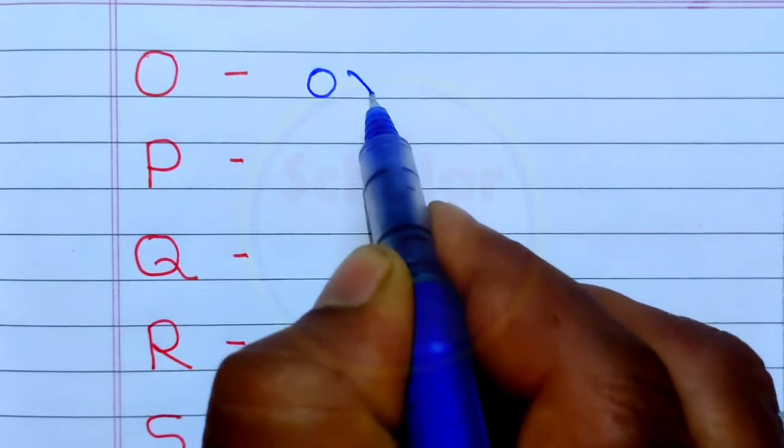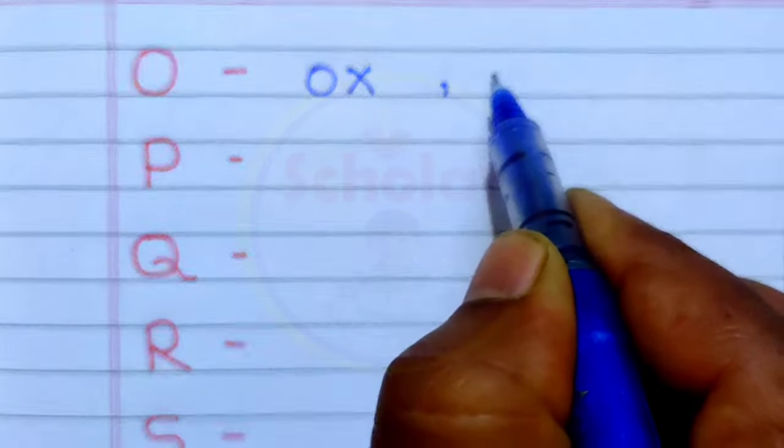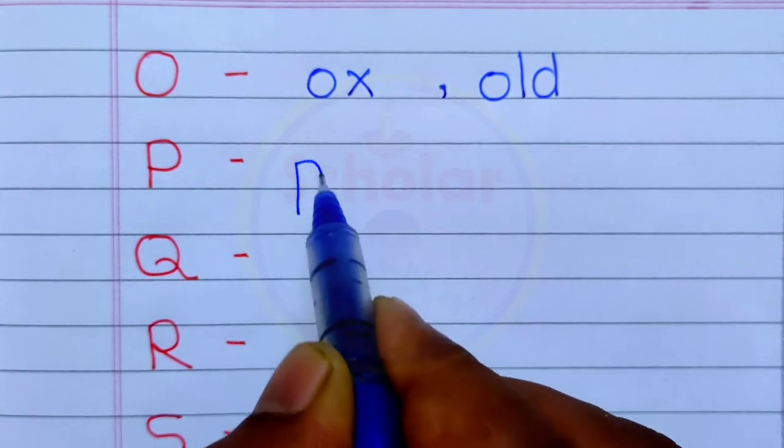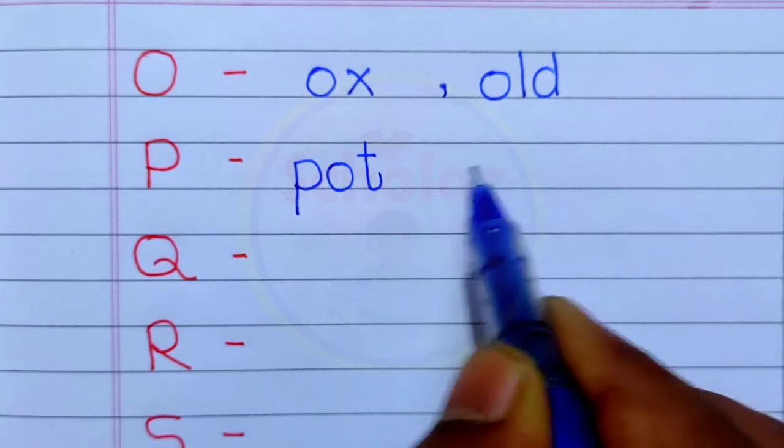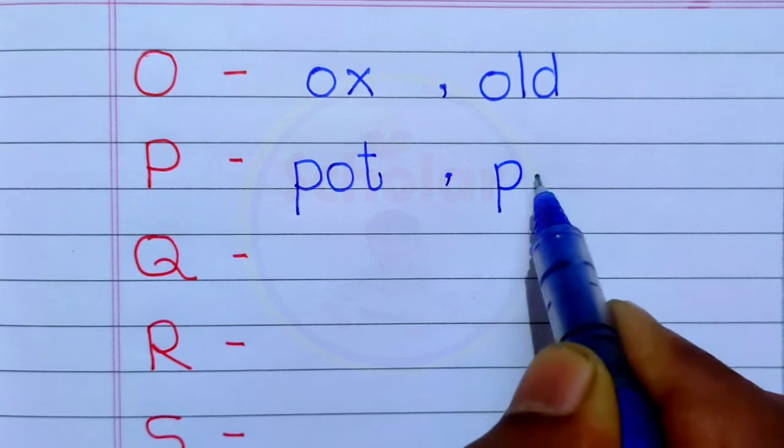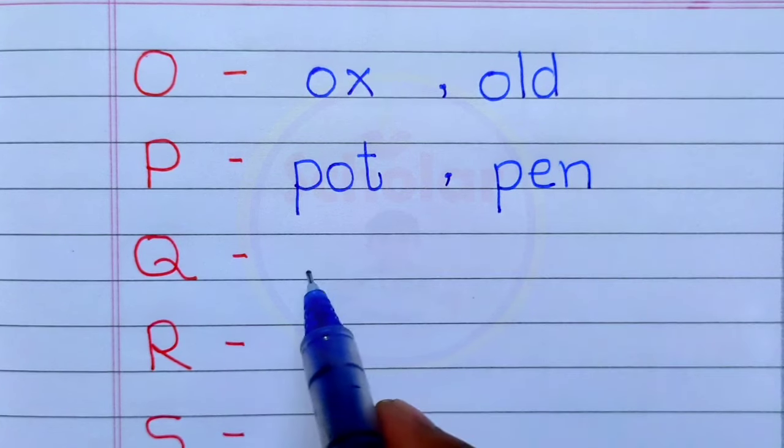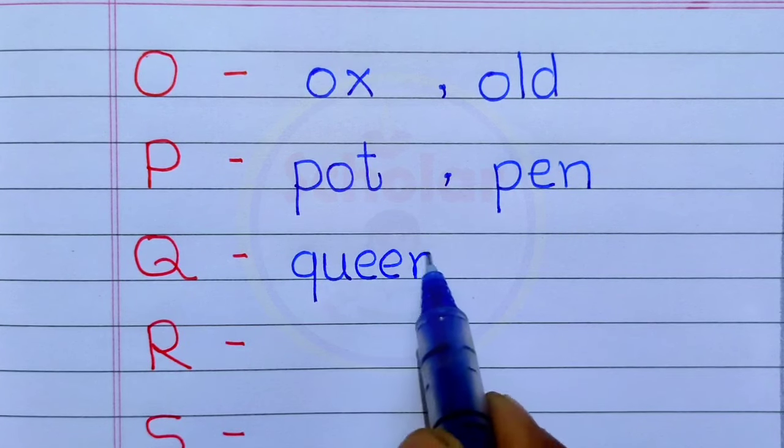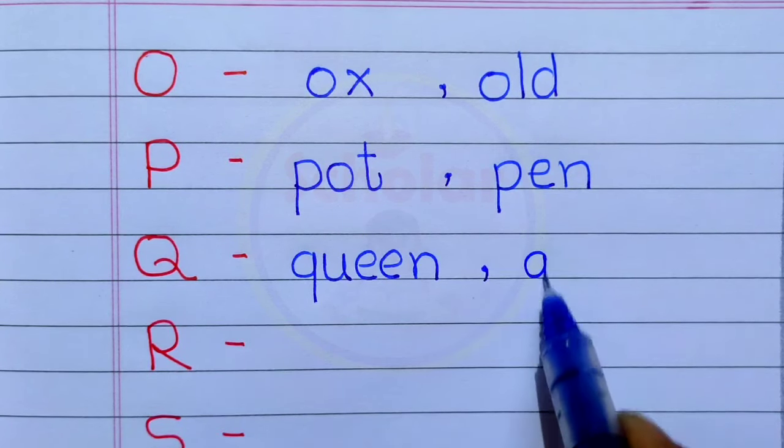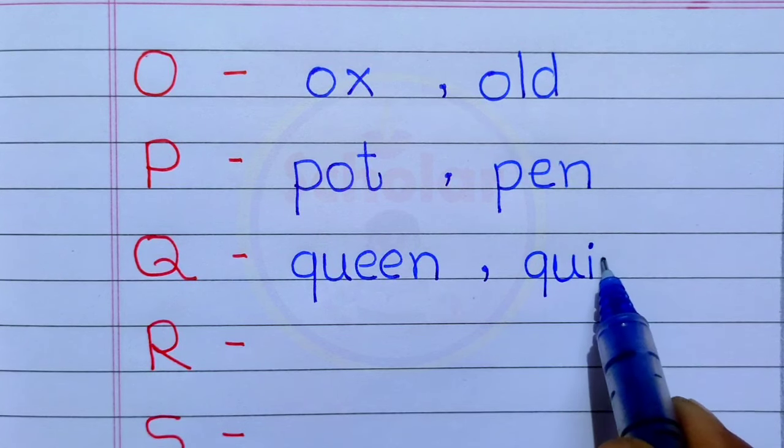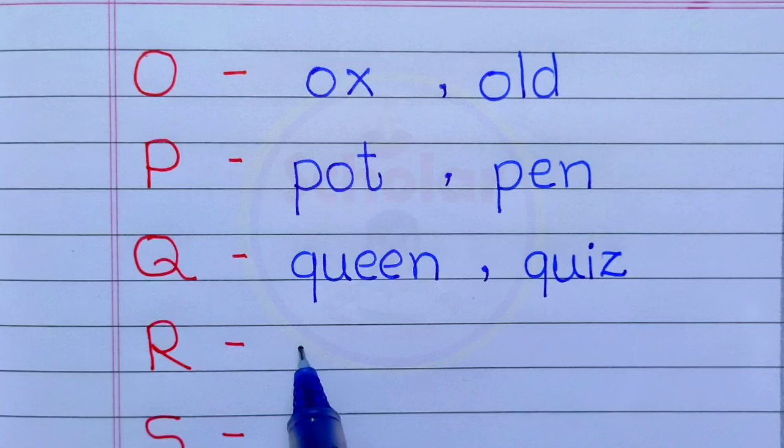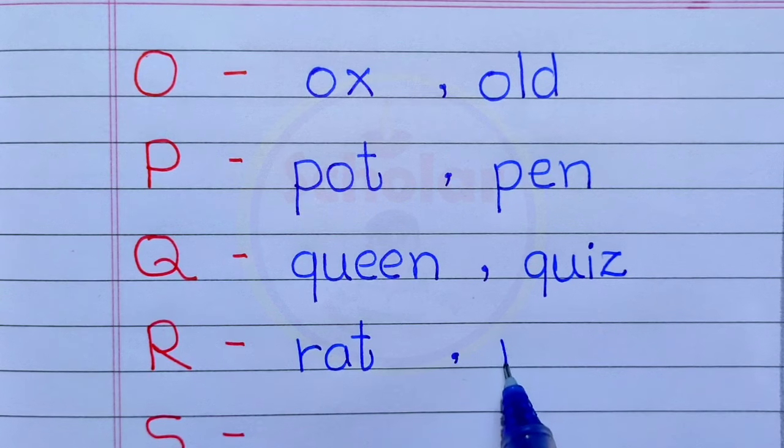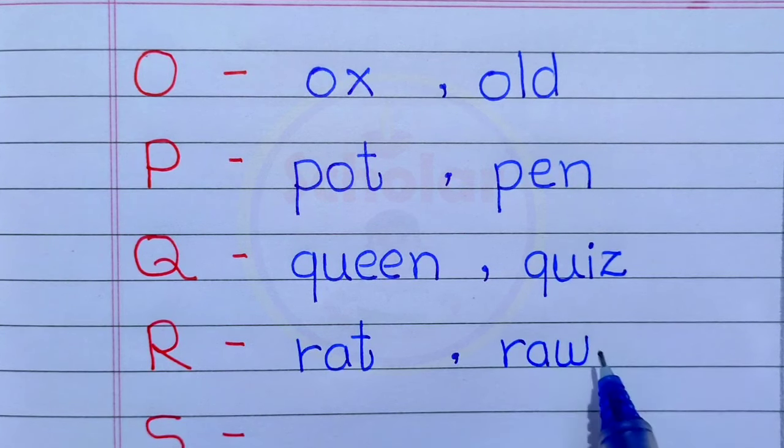O - Ox, Old. P - Pot, Pen. Q - Queen, Quiz. R - Rat, Row.